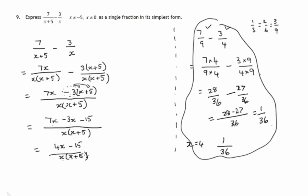That's just one example. We could put any value for x we like in here in this statement would be true that 7 over x plus 5 minus 3 over x is always equal to 4x minus 15 over x times x plus 5. No matter what value x takes.